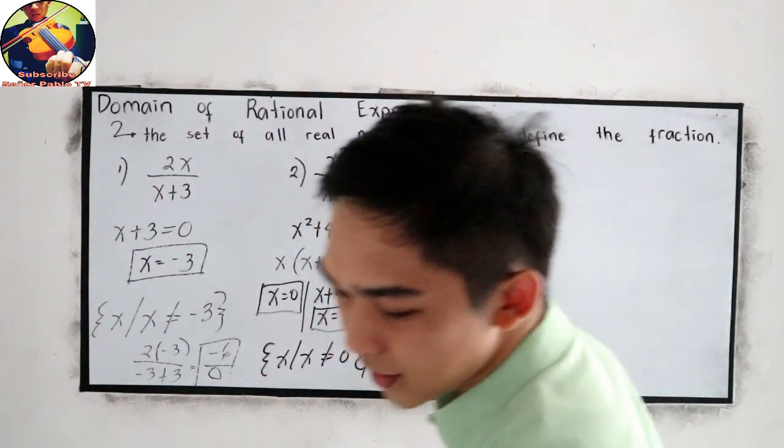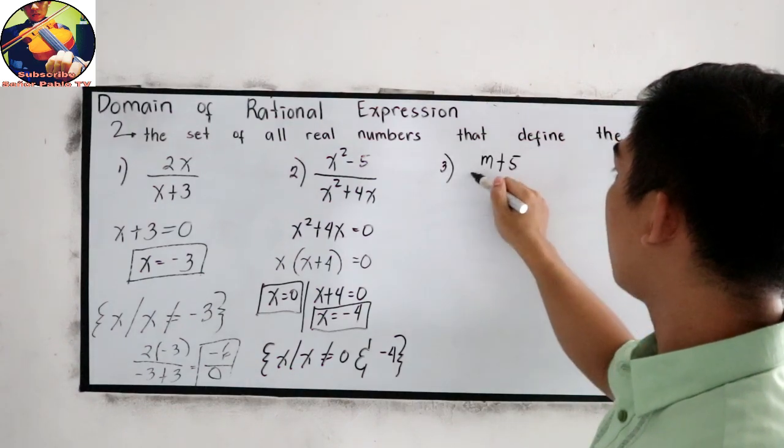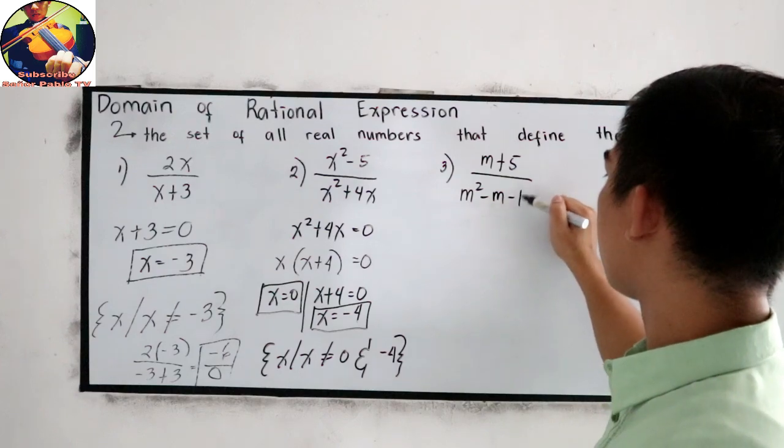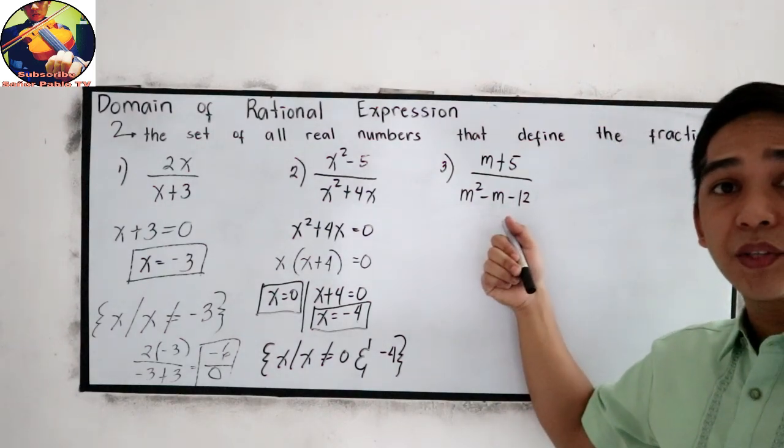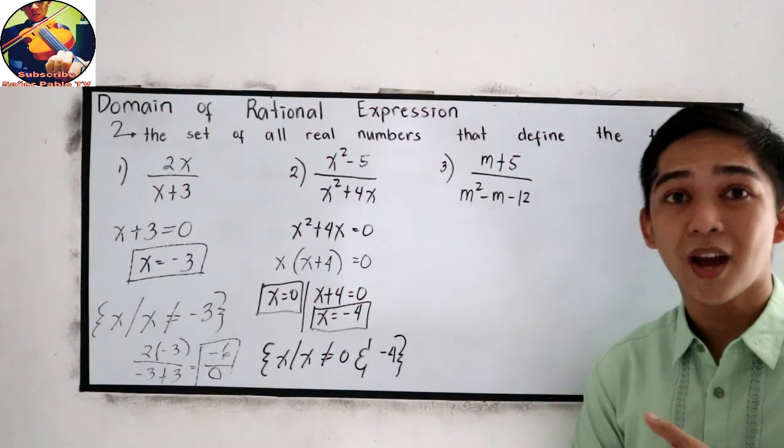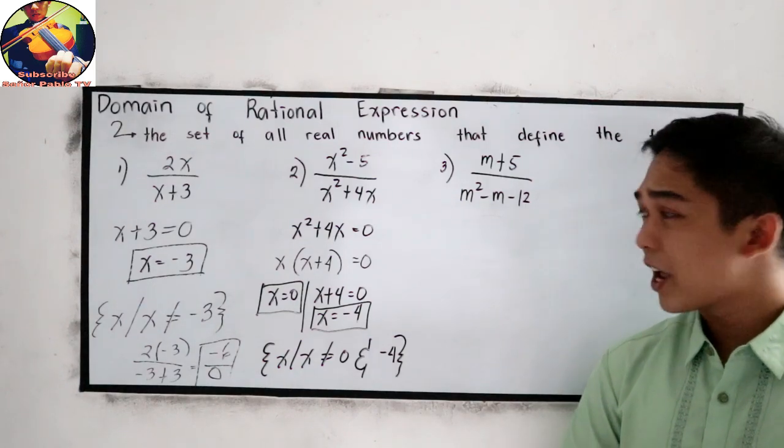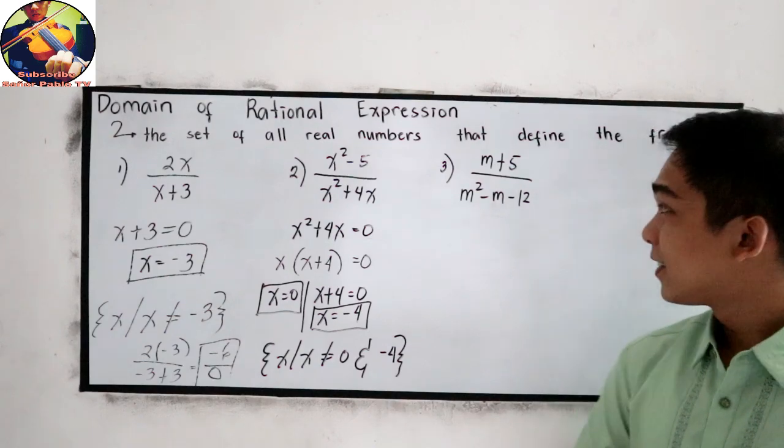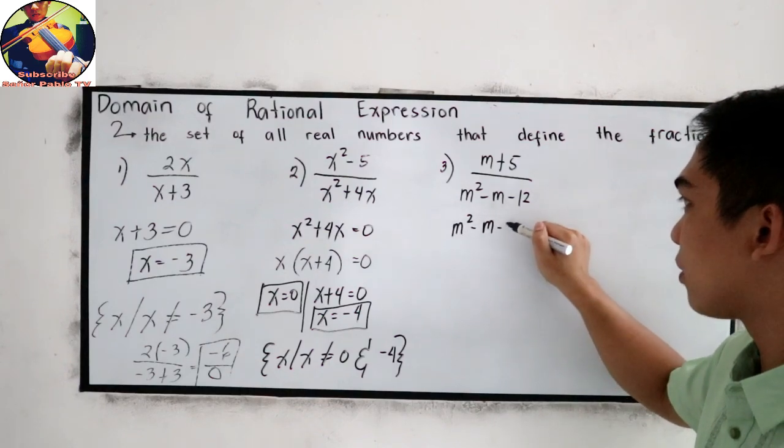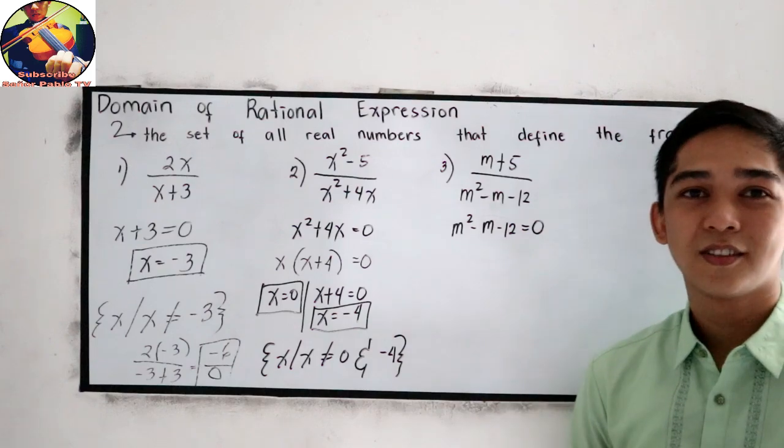Now, our third example: m plus 5 over m squared minus m minus 12. If you want to try number 3, you can pause the video. Then after answering, resume watching to check your work. Okay, let's check number 3. Copy the denominator, m squared minus m minus 12, then equate to 0. Now, solve for m.